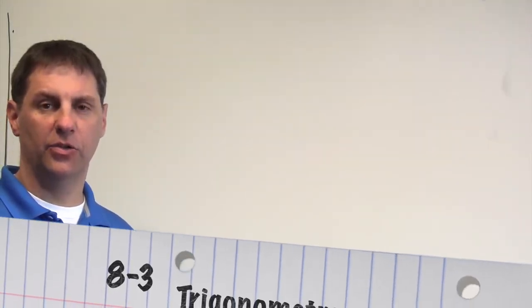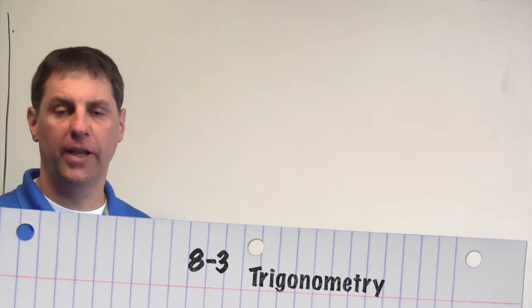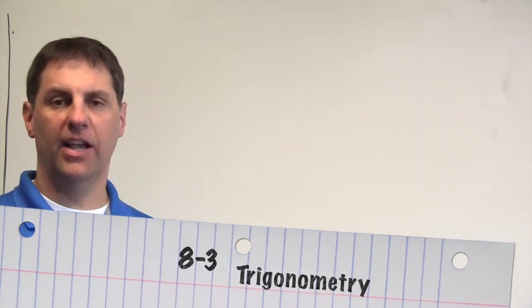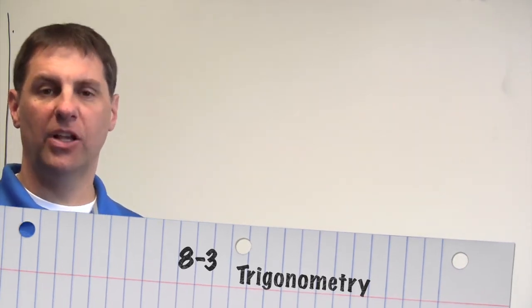Section 8.3 deals with trigonometry. In this section we are going to be using trig ratios that allow us to find missing sides and missing angles when we're given certain sides and certain angles. There are three trigonometric ratios: sine, cosine, and tangent. They are each a ratio of two sides of a right triangle.